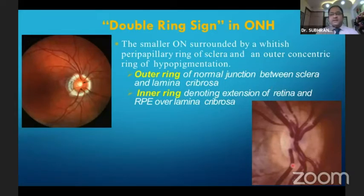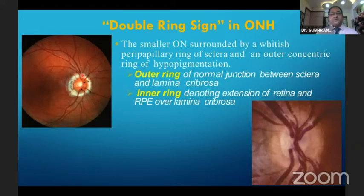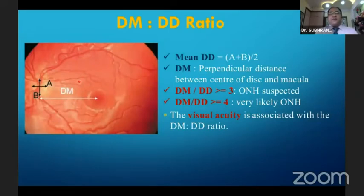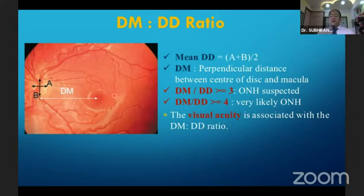Regarding the double ring sign in optic nerve hypoplasia: the smaller optic nerve is often surrounded by a whitish peripapillary ring of sclera and an outer concentric zone of hypopigmentation. The outer ring is the normal junction between the sclera and the lamina cribrosa, whereas the inner ring denotes the extension of retina and RPE over the lamina cribrosa. There is also the DM/DD ratio — the disc-to-macula distance divided by the disc diameter. A ratio ≥3 raises suspicion for optic nerve head hypoplasia, and ≥4 is very likely ONH. Visual acuity is also associated with this ratio.